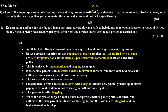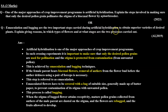Artificial hybridization is the technique where we use desired pollen grains to pollinate the desired stigma, in order to produce desired offspring such that each offspring has a superior character in the new generation.